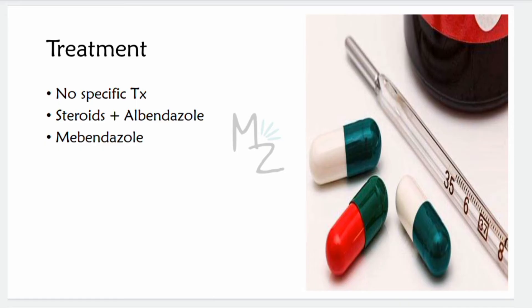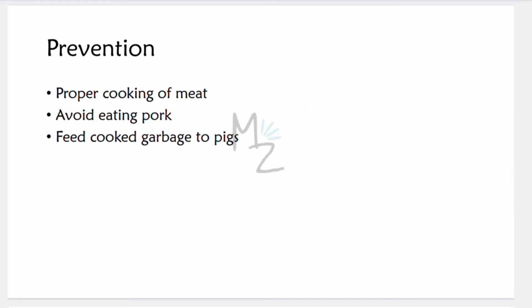Treatment: there is no effective treatment for trichinosis once larvae have infected the muscle, but for patients with severe symptoms, steroids plus albendazole can be useful. Mebendazole is effective against intestinal worms early in infection. Prevention: the disease can be prevented by properly cooking pork and by feeding pigs only cooked garbage — and ideally pork should be avoided altogether.